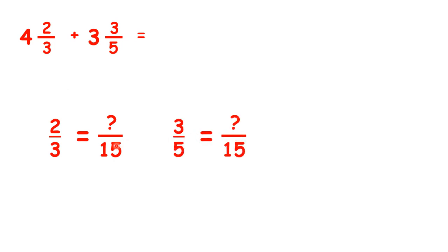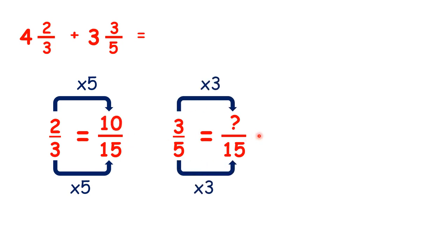2 thirds is the same as 10 fifteenths. And 3 fifths is the same as 9 fifteenths. So we can rewrite our question as 4 and 10 fifteenths, plus 3 and 9 fifteenths.